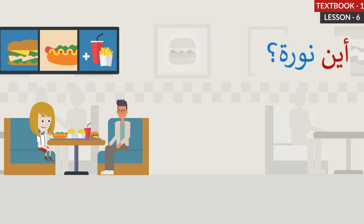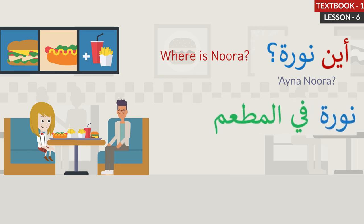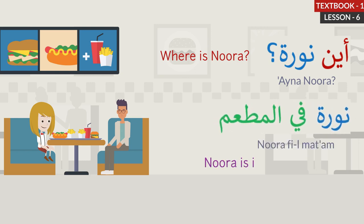Aina Noora? Where is Noora? The answer is: Noora Philmatam. Noora is in the restaurant. Let's repeat: Aina Noora? Where is Noora? Noora Philmatam. Noora is in the restaurant.